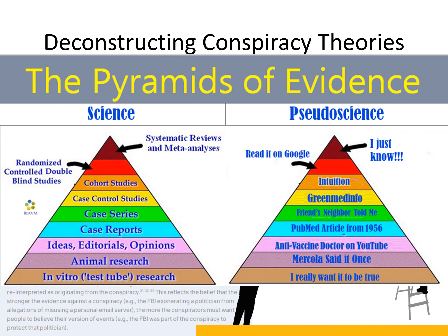For pseudoscience, you can see the pyramid of pseudoscience. At the bottom you have 'I want it to be true,' and then you have other non-reliable sources of information. On the science side, you have more structured ways of finding and receiving information and doing studies — a scientific method, of course.